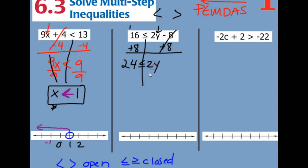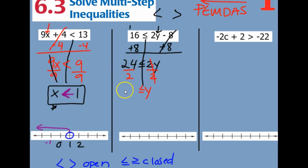Then the opposite of multiplying by 2 is dividing by 2. So we're left with y, a symbol, and then 24 divided by 2 gives us 12.